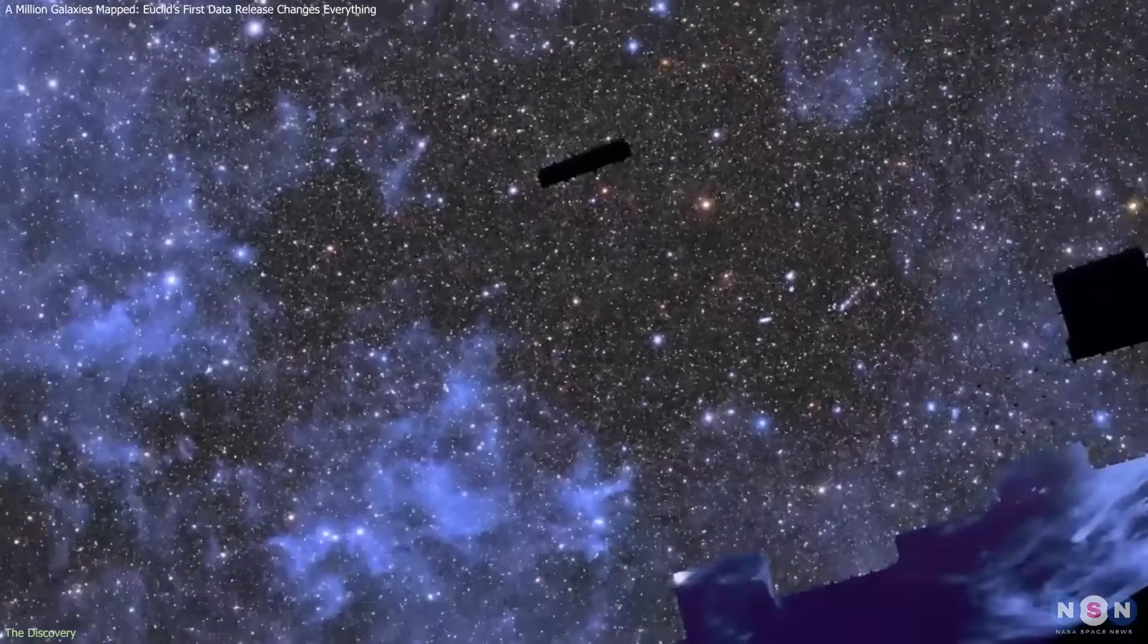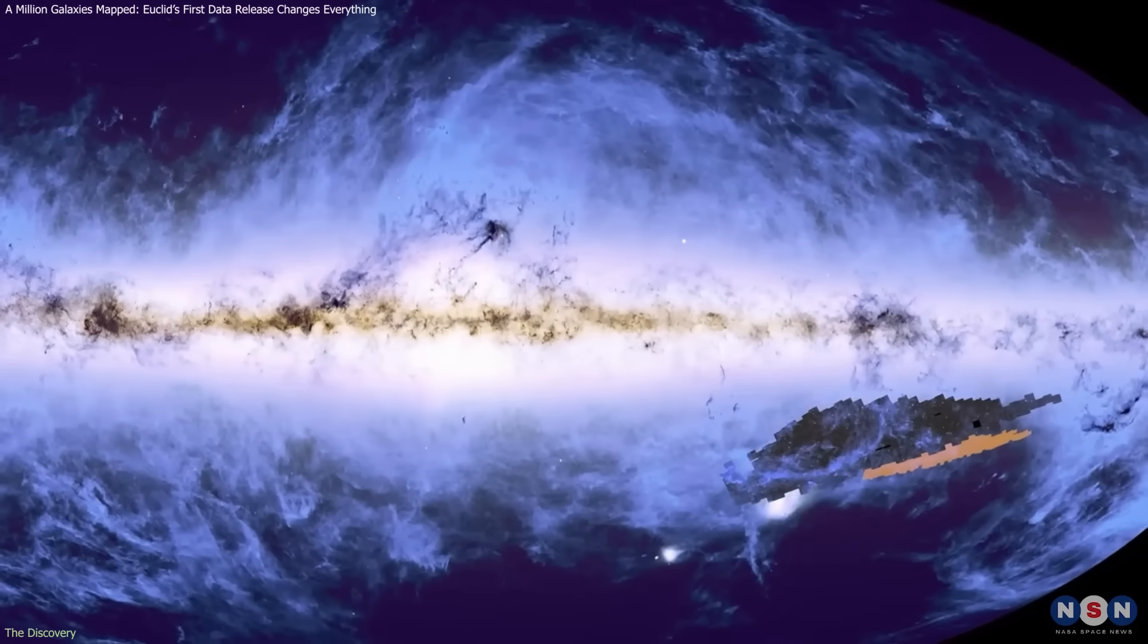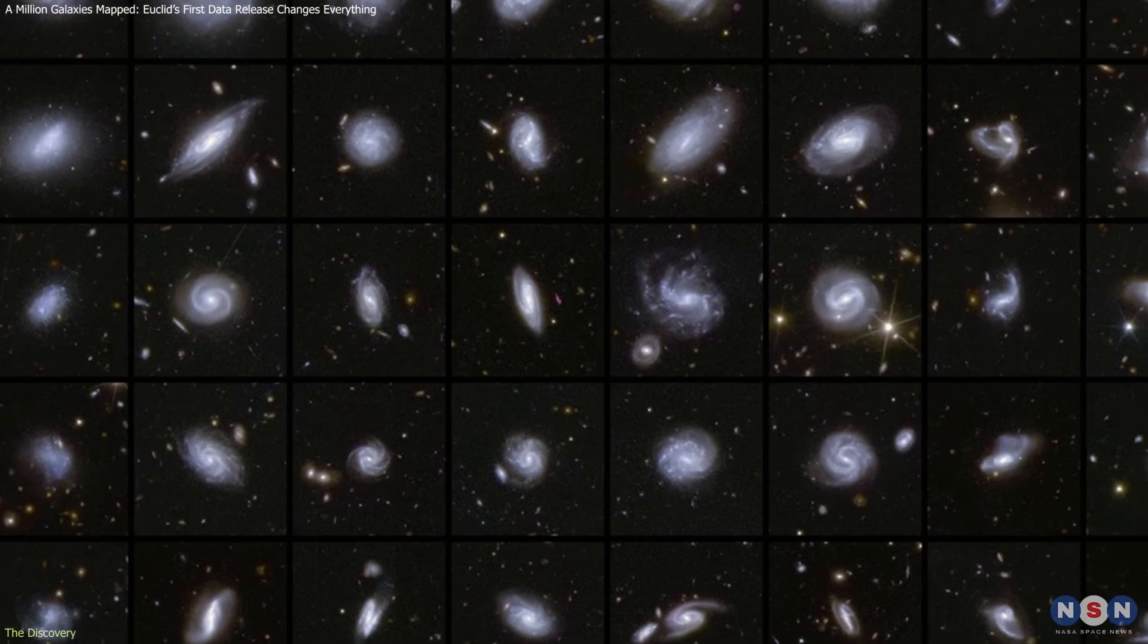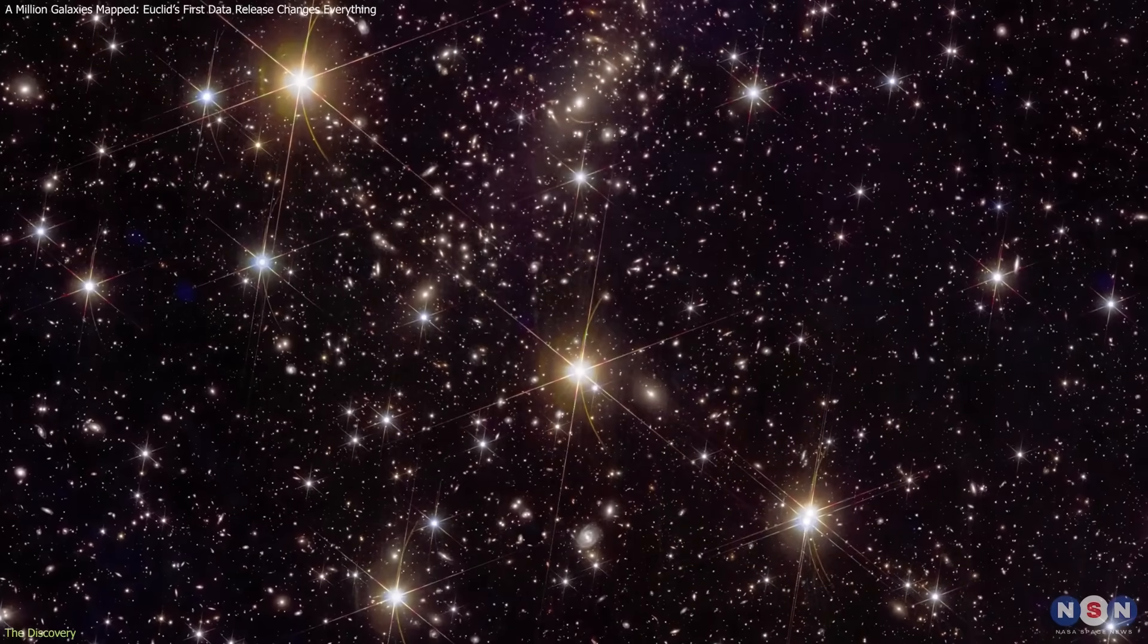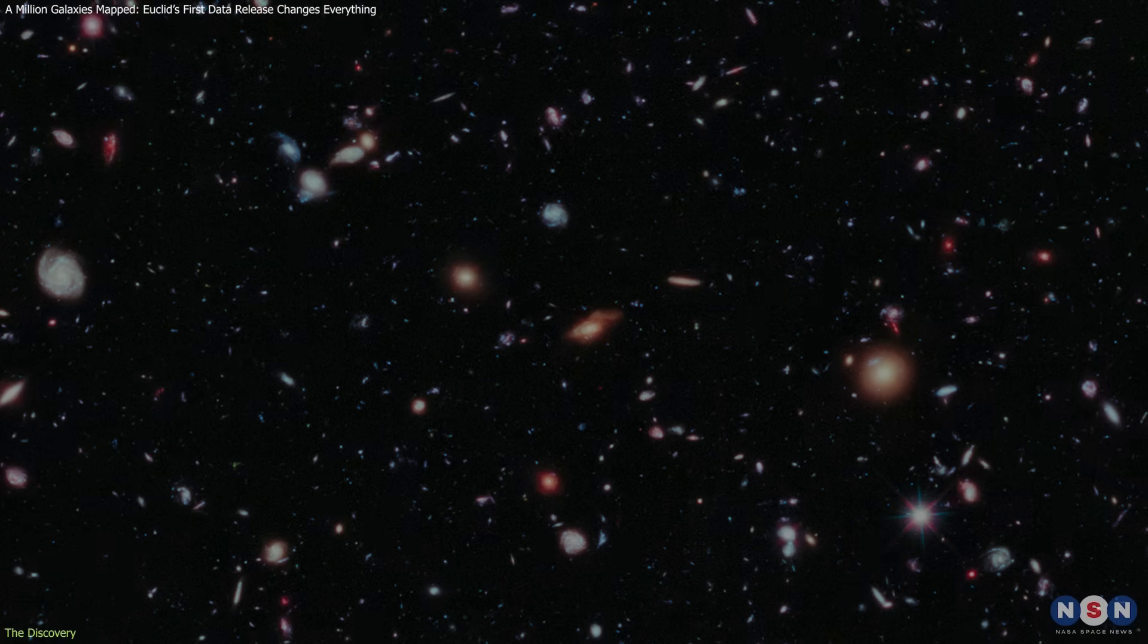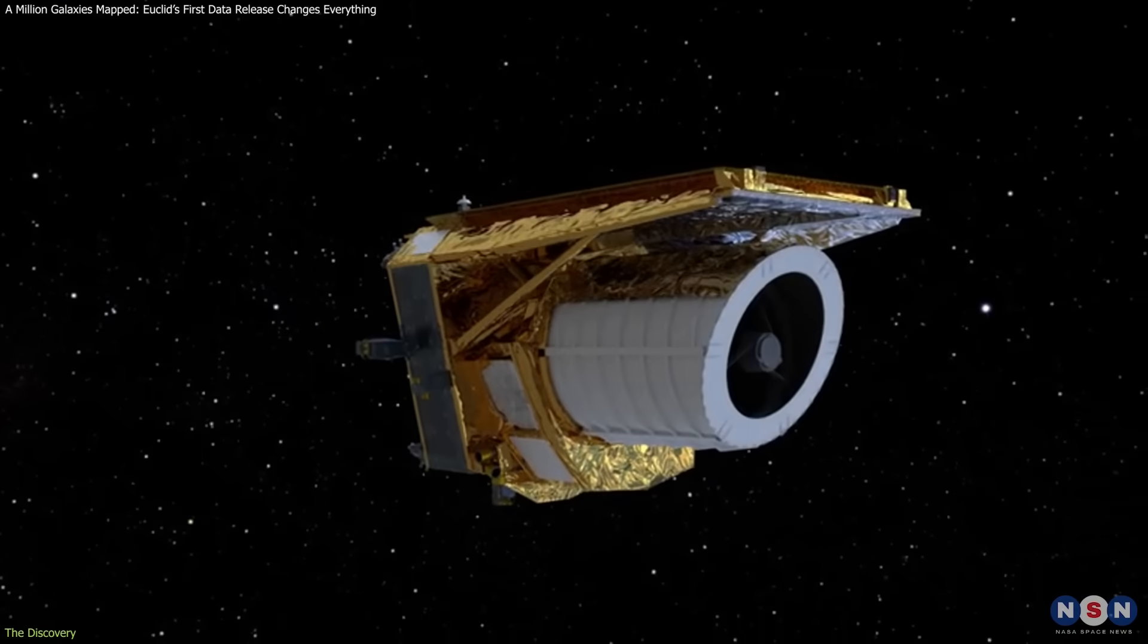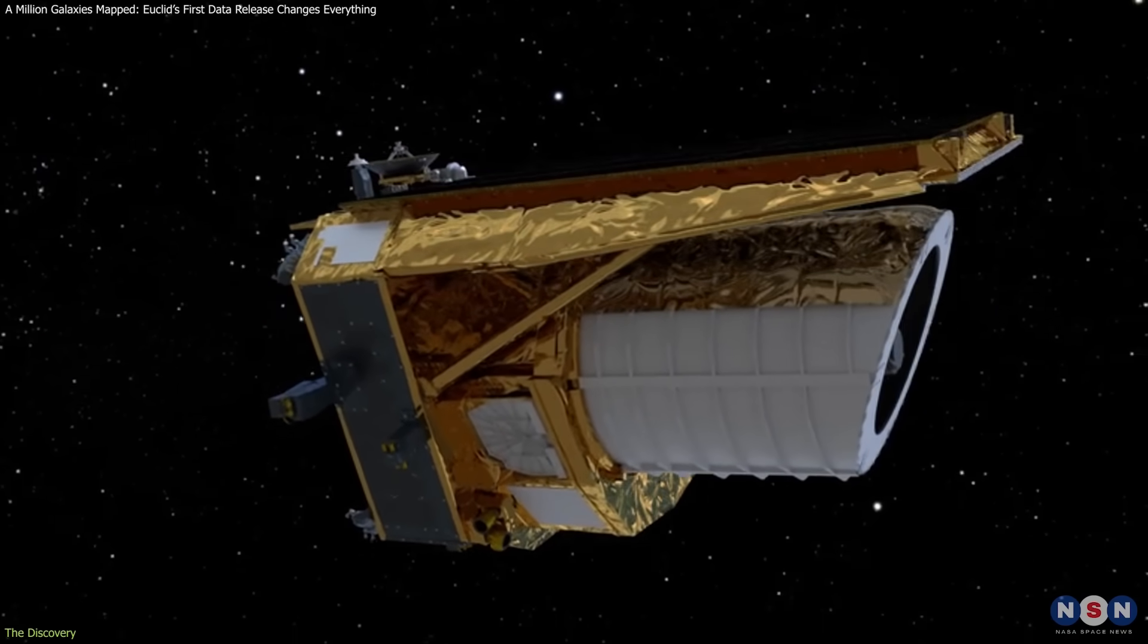Euclid's Quick Data Release 1 represents only about 0.5% of the mission's full dataset, yet it already includes over 1.2 million large galaxies, captured with a blend of wide coverage and high resolution that bridges the gap between deep, narrow Hubble images and broad, shallow ground-based surveys. This combination is precisely what Euclid was built for, and the early results reflect that strength.